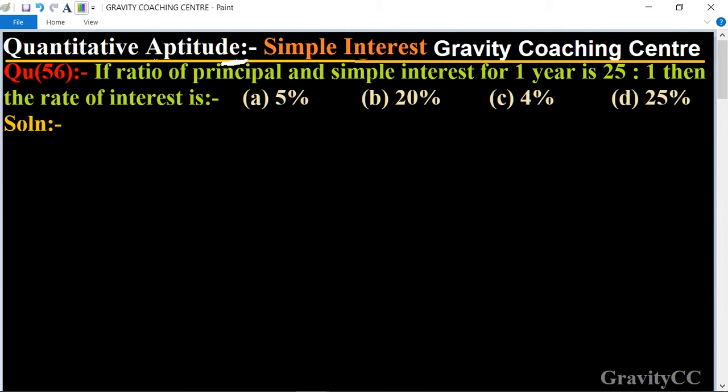Quantitative aptitude chapter: Simple Interest, question number 56. If the ratio of principal and simple interest for one year is 25 to 1, then the rate of interest is? First, we let the principal be 25x and interest be x.